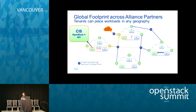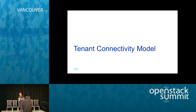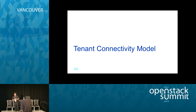Before I dive into that, I'd like to discuss the tenant connectivity model. Different tenants have different connectivity requirements. Once we understand those, we can define requirements for both underlay and overlay. We take a top-down approach — not defining use cases ourselves, but getting them from our tenants and customers. We look at what services we're exposing, then design our underlay and overlay network based on that.